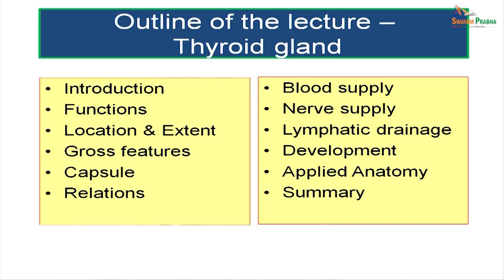The patient asked how the thyroid gland, which secretes thyroxine, relates to swallowing. The doctor explained that its relation to various structures in the neck causes the thyroid gland to move when there is swelling in it. So let us look at the normal anatomy of thyroid gland, covering: introduction, functions, situation, gross features, coverings, related structures, blood supply, nerves, lymphatic drainage, development, applied aspects, and a summary.